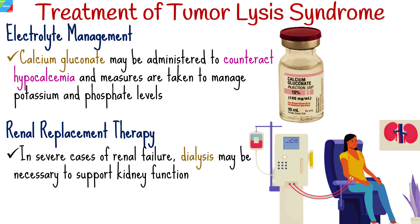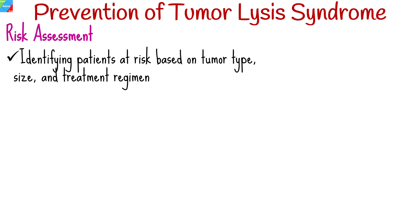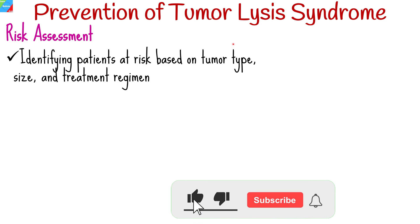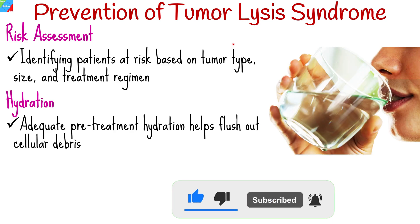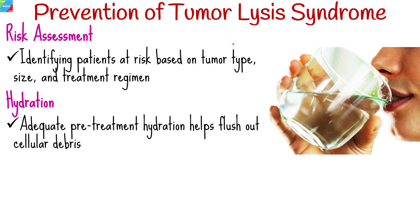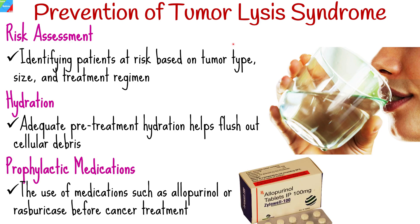Preventive measures are crucial, especially in patients at high risk of developing Tumor Lysis Syndrome. This includes identifying patients at risk based on tumor type, size, and treatment regimen. Adequate pretreatment hydration helps flush out cellular debris and reduce the risk of TLS. The use of medications such as allopurinol or rasburicase before cancer treatment can lower the risk. Early identification, preventive measures, and prompt intervention are vital in mitigating the potentially life-threatening consequences of Tumor Lysis Syndrome and improving patient outcomes.